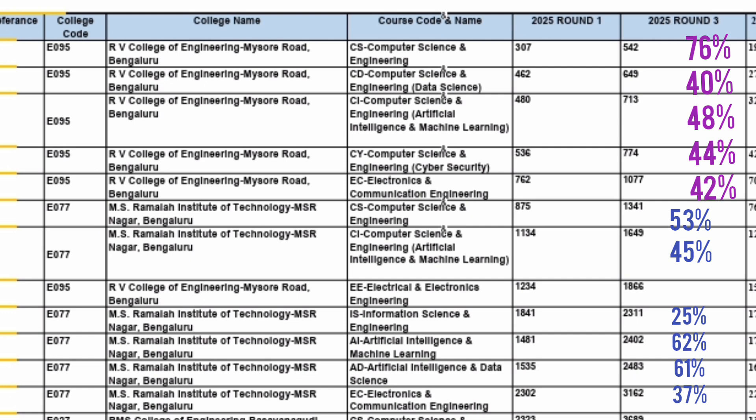Let me start with RV College as an example. For RV College CSE, round 1 was 307 and in round 3 it became 542 — that is a big jump of 76%. How I calculated: 307 × 1.76 = 542. Other branches of RV College had relatively smaller jumps: around 40%, 48%, 44%, and 42%. So other branches were in the range of 40–50%, but CSE jumped higher.